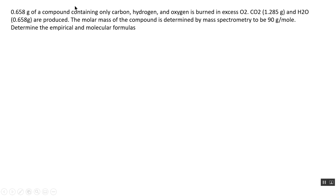The question also provides more information: the molar mass was determined by an independent process called mass spectrometry, and it turns out the molar mass is equal to 90 grams per mole. The question asks you to use all the information provided to determine the empirical and molecular formulas for that compound.